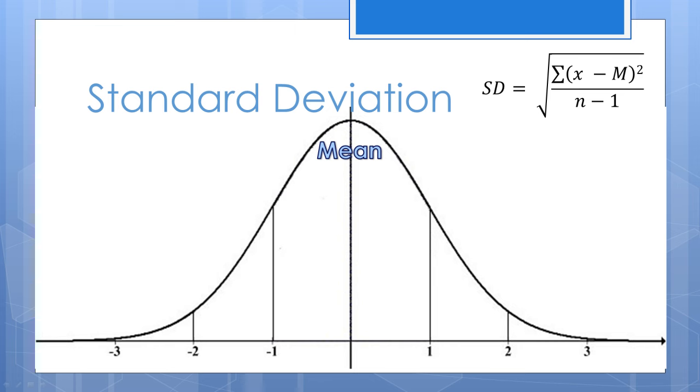In a normal distribution, approximately 34% of scores fall between the mean and one standard deviation above the mean. Therefore, based on its symmetry, approximately 68% of scores fall between one standard deviation above and one standard deviation below the mean.